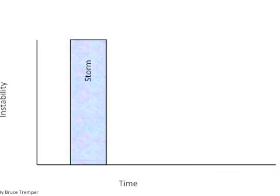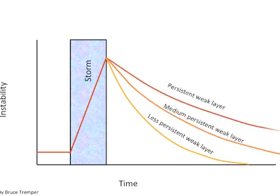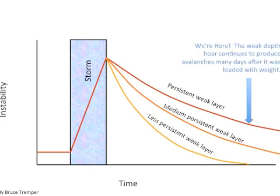If we look at instability versus time, here's a storm. The instability is low, then when the storm comes it loads the snowpack with weight. Snow does not like rapid change, so the instability goes way up. But after the storm, the snowpack starts gaining strength — the weak layers start to adjust to their load. With less persistent weak layers, it gains strength pretty quickly. With medium persistent weak layers, it takes a little longer. With really persistent weak layers like depth hoar, it takes many, many days for the snowpack to quit producing avalanches after being loaded. That's what makes it so tricky, even for avalanche professionals. These persistent weak layers have to be equally matched with persistent patience, and that's what makes them so deadly.